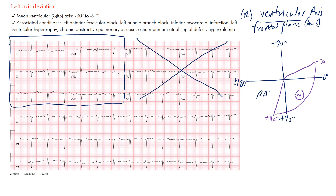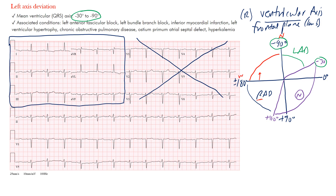Right axis deviation is everything in this region. Left axis deviation is everything between negative 30 and negative 90 degrees. Everything from negative 90 to negative 180 is called a right superior axis — also called a northwest axis because this is north and this is west. Some call it 'no man's land' because not much shows up there, though ventricular tachycardia can appear there, and that's actually used as a diagnostic criterion for VT.